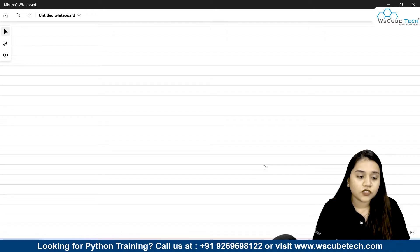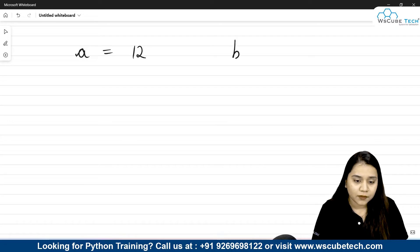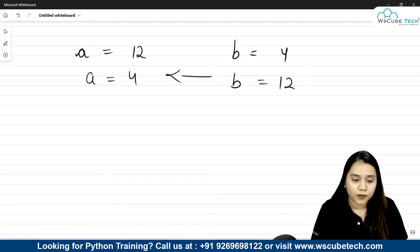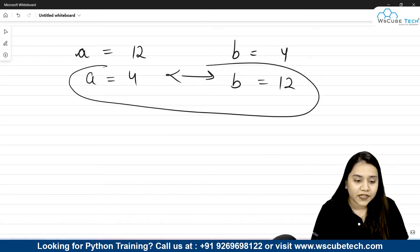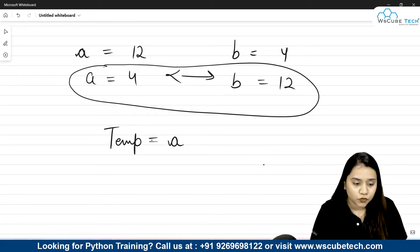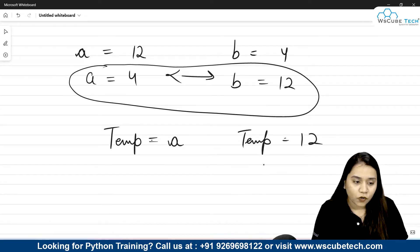First, let's understand the logic behind it. Suppose you have two variables: a is equal to 12 and b is equal to 4. Now what I want is that the value of a should become 4 and the value of b should become 12 — this is what swapping means. To obtain that, we will need a temporary variable. The temporary variable will store the value of a, so temp is equal to a, meaning temp will hold the value 12.